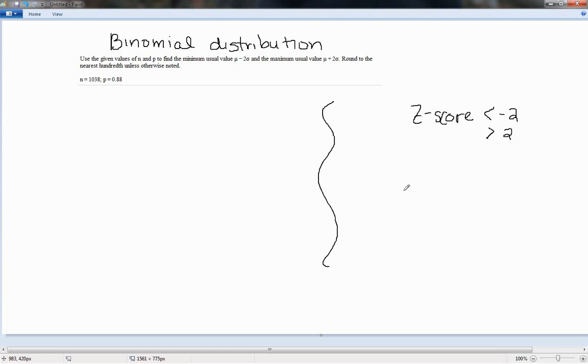Now another way of finding this is we can find the interval of usual values, meaning what interval would they be usual and then anything outside of that would be unusual. So we're finding the cutoffs here. We're finding what exactly would have a z-score of 2 and what exactly would have a z-score of negative 2, and then anything in between there would be usual.